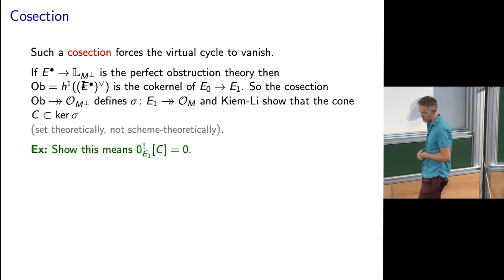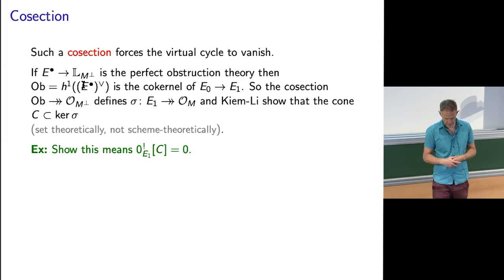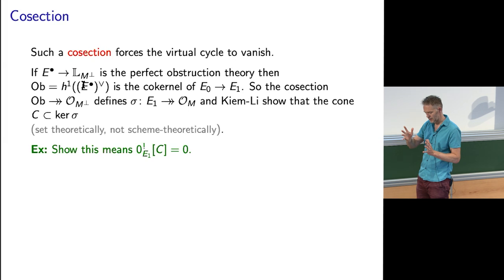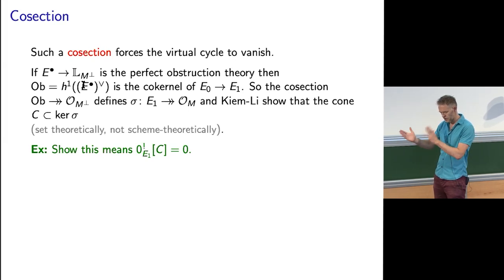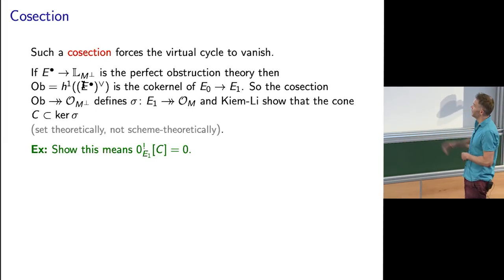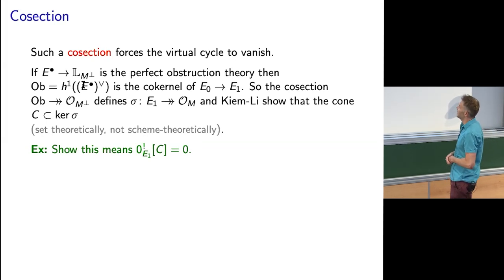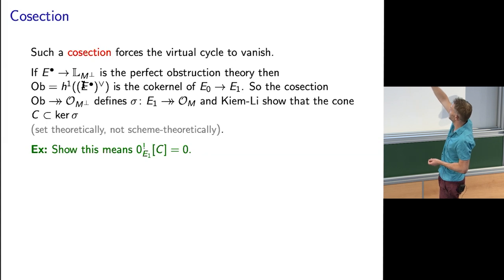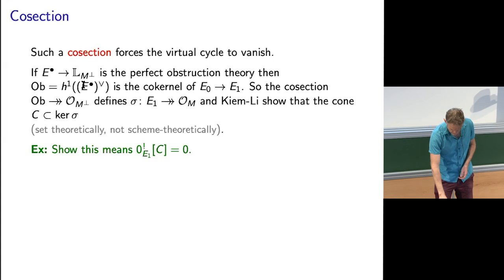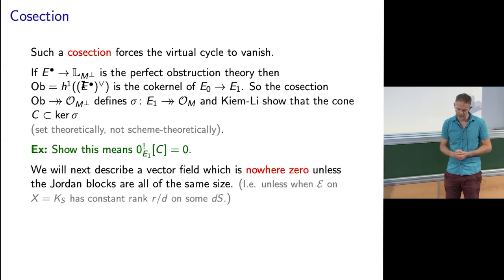Exercise — similar to one I set before — where you had a section lying in a sub-bundle of a bundle, transverse to the zero section of the sub-bundle. Then the obstruction bundle was the quotient of those two bundles, and the virtual cycle was the Euler class of that. This is just that exercise repeated more abstractly, using the fact that the Euler class of the structure sheaf is zero. So it does mean the virtual cycle vanishes.